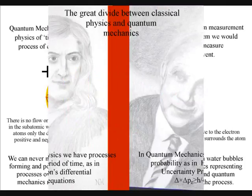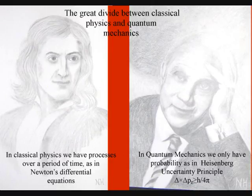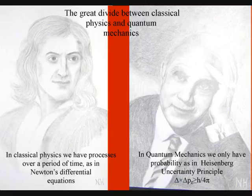This forms the great divide between classical physics, representing the processes over a period of time as in Newton's differential equations, and quantum mechanics, representing the passage of time with probability built into the process.